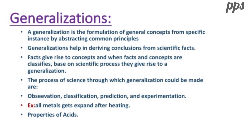Generalization is the formulation of general concepts from specific instances by abstracting common principles. It helps in deriving conclusions from scientific facts. Facts give rise to concepts, and when facts and concepts are classified based on a scientific process, they give rise to generalization. The process of science through which generalization could be made are: observation, classification, communication, prediction and experimentation. For example: all metals get expanded after heating; properties of acids; the process of evaporation takes place on heating water.